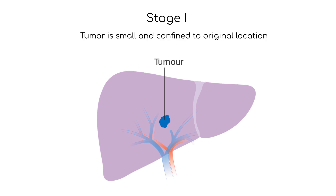Treatment for stage 1 cancer typically involves surgery to remove the tumor followed by radiation therapy or chemotherapy to kill any remaining cancer cells.